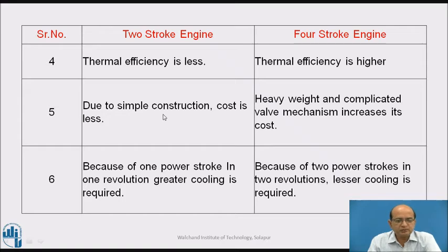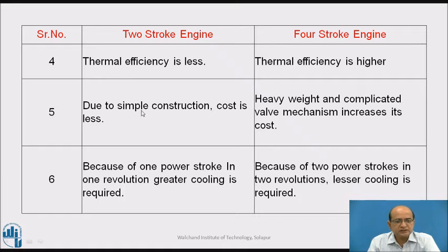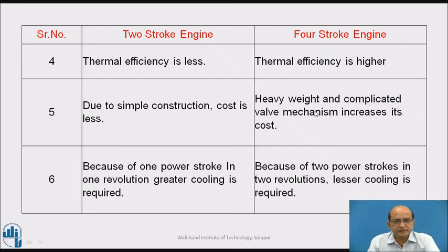The next point of comparison is related to the cost of the engine. As seen earlier, the two-stroke engine is lightweight and simple in design, so its simpler construction leads to lesser cost. Whereas the heavy weight and complicated valve mechanism of the four-stroke engine increases its cost — the engine design as well as the manufacturing of those valve parts increases the cost of the four-stroke engine.